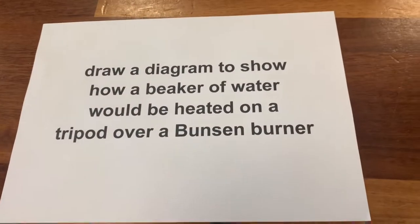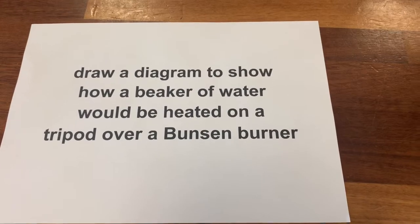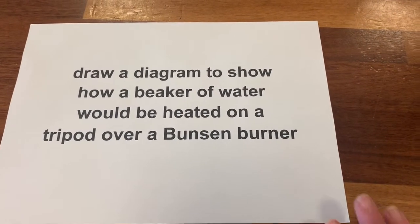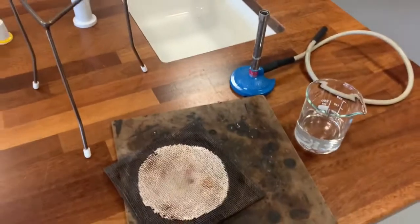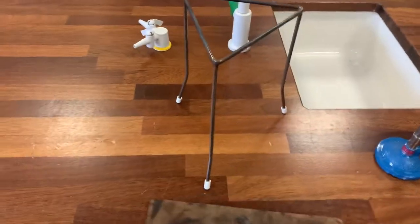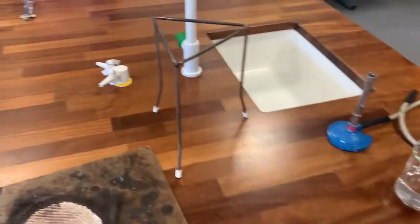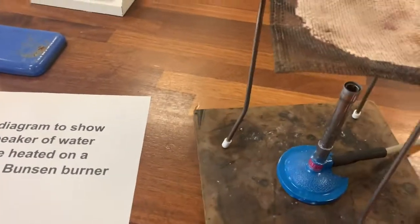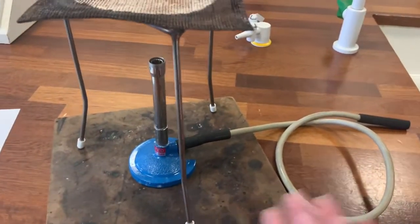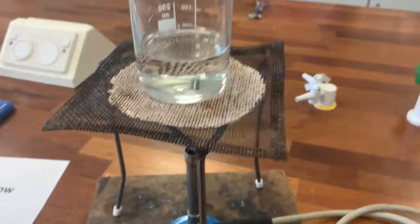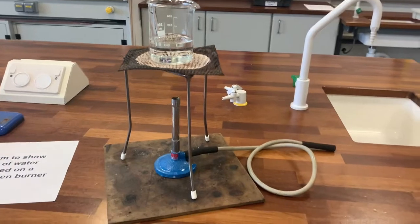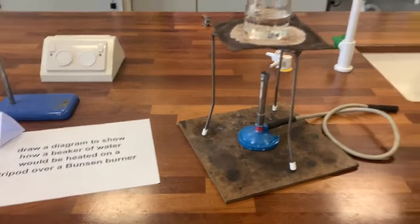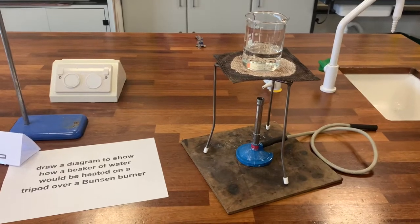In your booklet it asks you to draw a diagram to show how a beaker of water would be heated on a tripod over a Bunsen burner. I've got the apparatus here — I'm going to show you what it looks like in real life and see if you can put all of those diagrams together. We put the tripod on the safety mat, the gauze on top of the tripod, the Bunsen burner underneath — remember that's the reason the tripod only had two legs in the diagram — and the beaker of water on top. Can you draw it in diagram form and show your teacher?